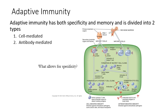Red bone marrow is where we make lymphocytes — both B cells and T cells. B cells remain in the bone marrow to mature; T cells migrate to the thymus to mature. Once mature, they are capable of antigen recognition, typically requiring a T cell to be presented with an antigen by an APC, though in some cases B cells can activate themselves. This cascade produces T cell clones including cytotoxic T cells, memory T cells, and helper T cells, as well as a B cell cascade producing memory B cells and plasma cells important for antibody-mediated defense.